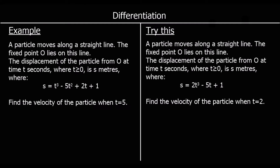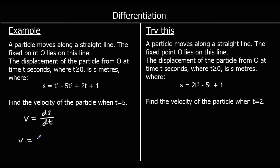Here's a question. We've got a particle moving along a straight line. The fixed point O lies on this line. The displacement of the particle from O at time t seconds, where t is greater than or equal to zero, is s meters, where s equals t cubed minus 5t squared plus 2t plus 1. Find the velocity when t equals 5. To find the velocity, we differentiate the displacement. So v equals ds/dt. Differentiating: t cubed times by 3 gives 3t,